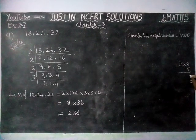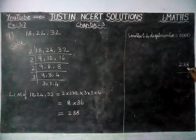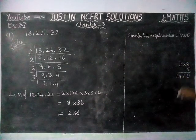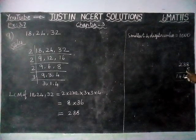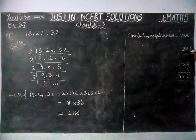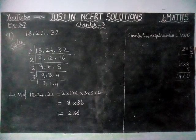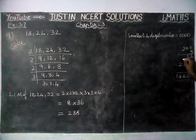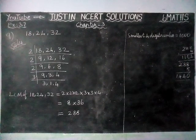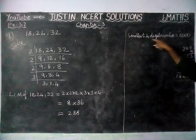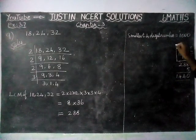288 × 5 = 1440. Now checking 288 × 4: 4 × 8 = 32, carry 3; 4 × 8 = 32 + 3 = 35, carry 3; 4 × 2 = 8 + 3 = 11. So 288 × 4 = 1152. If we take 288 × 3 it gives a 3-digit number, but we need the smallest 4-digit number. So the answer is 1152.